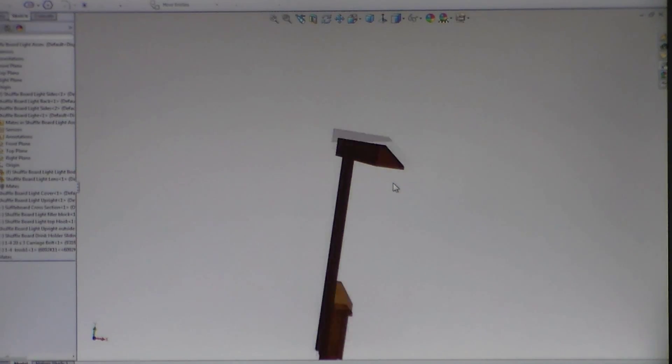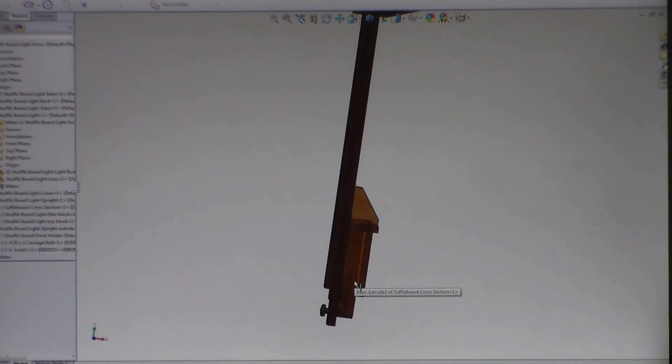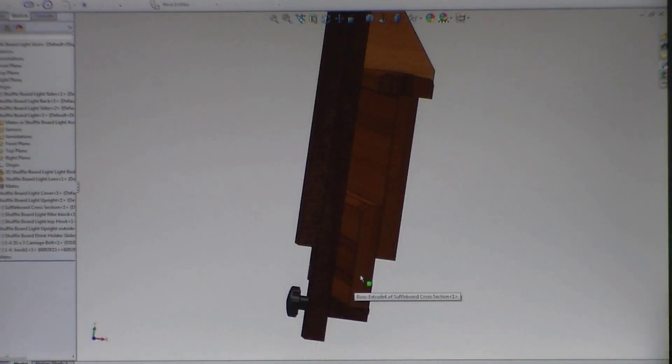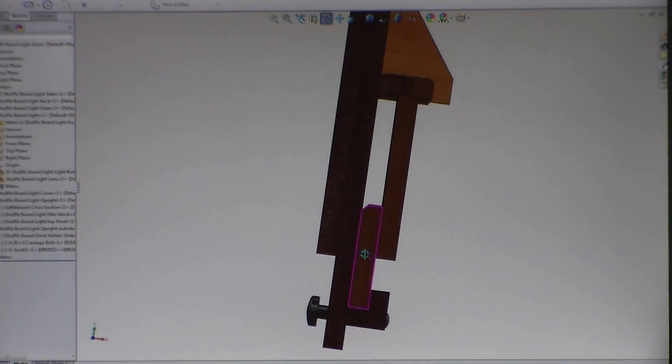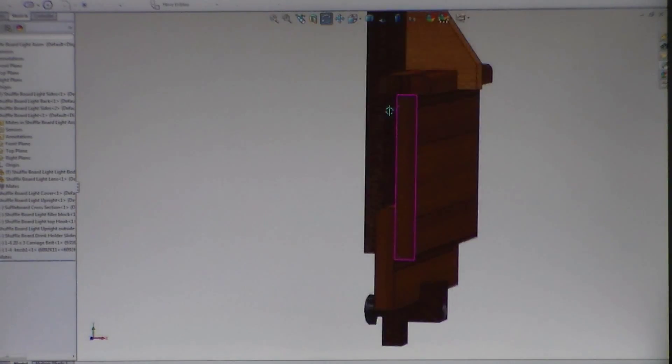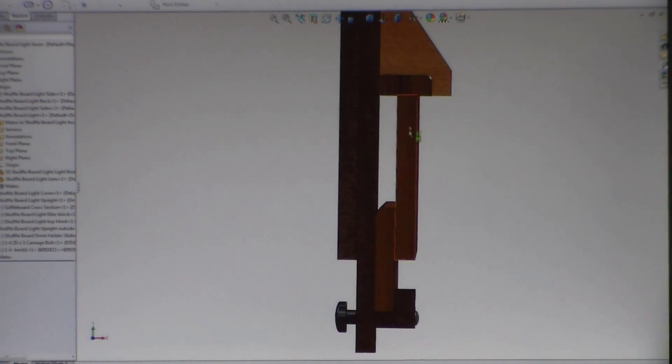So, one thing that I've got going on here is, if you see the profile of the table here, here's my rail. Here we are. Here's my rail, my cap piece, my skirt board.